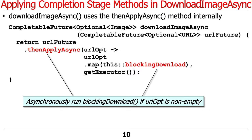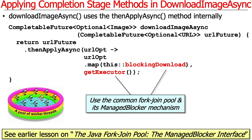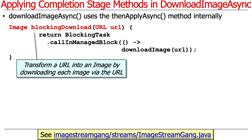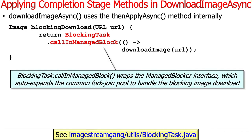We'll asynchronously run blockingDownload if URLOpt is not empty. We'll use the common fork-join pool and the managed blocker mechanism. blockingDownload is a method that performs a blocking download in the context of the managed blocker mechanism, so that the common fork-join pool will be expanded as needed when blocking occurs. You can see it takes an image URL and returns an image, transforming the URL into an image by downloading it. It uses the blockingTaskCallAndManagedBlock helper method, which wraps the managed blocker interface in a nice, clean way.